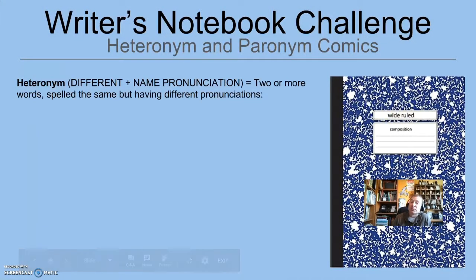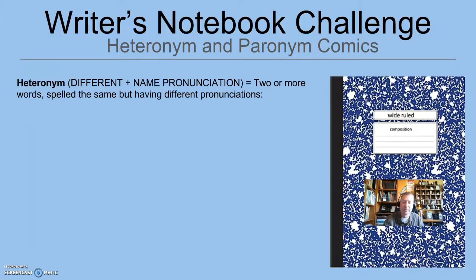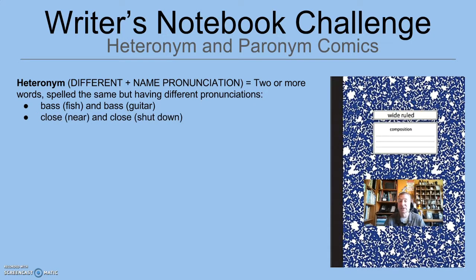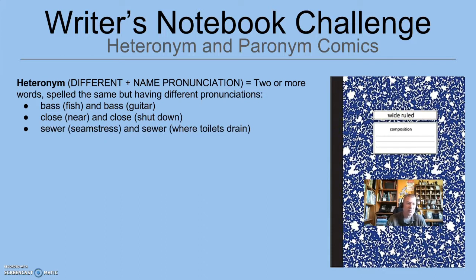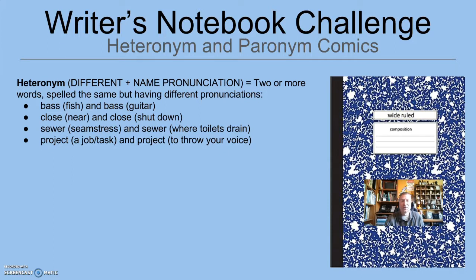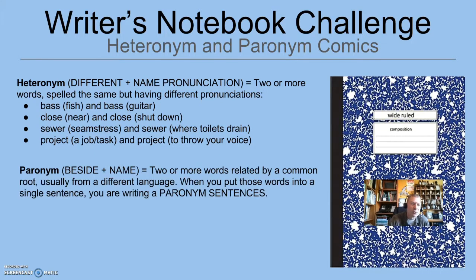The first thing I need to define for you is the word heteronym. Heteronym comes from two roots: 'different' and 'name' — actually 'name pronunciation,' because that's what a heteronym is: two or more words spelled exactly the same but with different pronunciations. Examples would be like 'bass,' the fish, or 'bass,' the guitar. Or 'close,' as in nearby, and 'close,' the verb, as in shut down. And here's one that'll throw you: 'sewer' — a seamstress — versus 'sewer,' where your toilets drain. Those are heteronyms. 'Project' and 'project' — which order do you put them in? They're fun words, like tongue twisters but on the word level. They mess with your brain. Those are heteronyms.